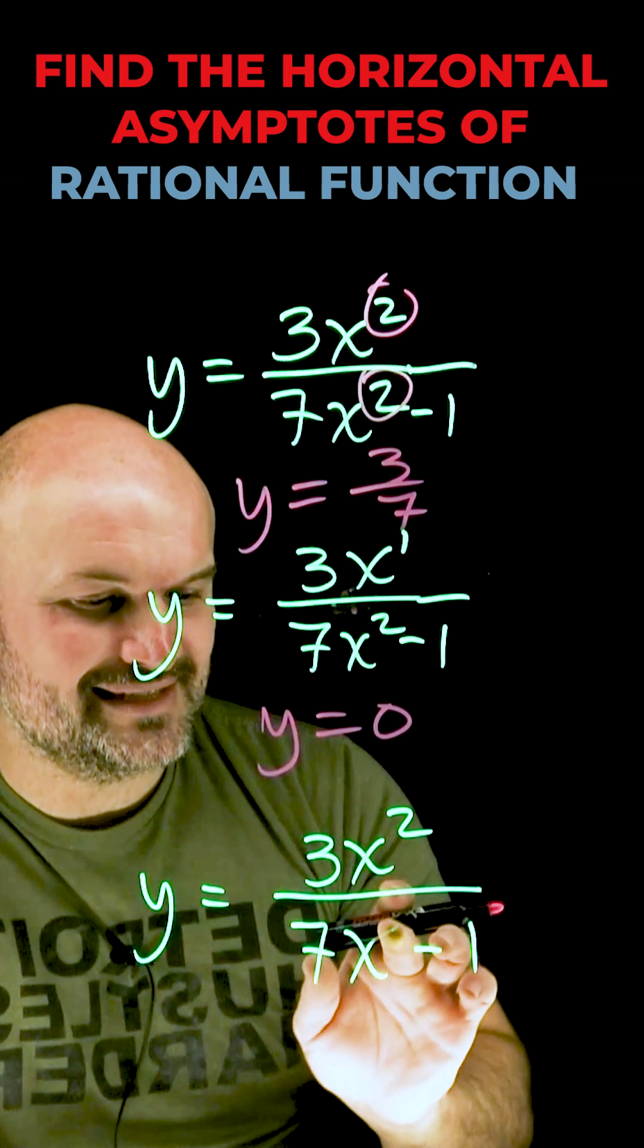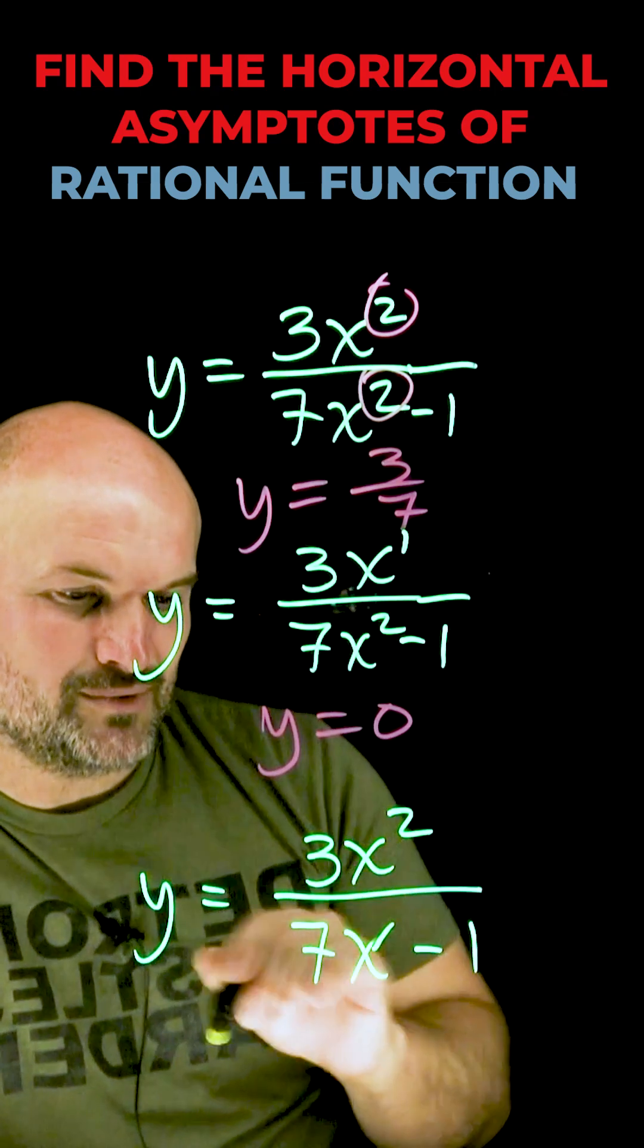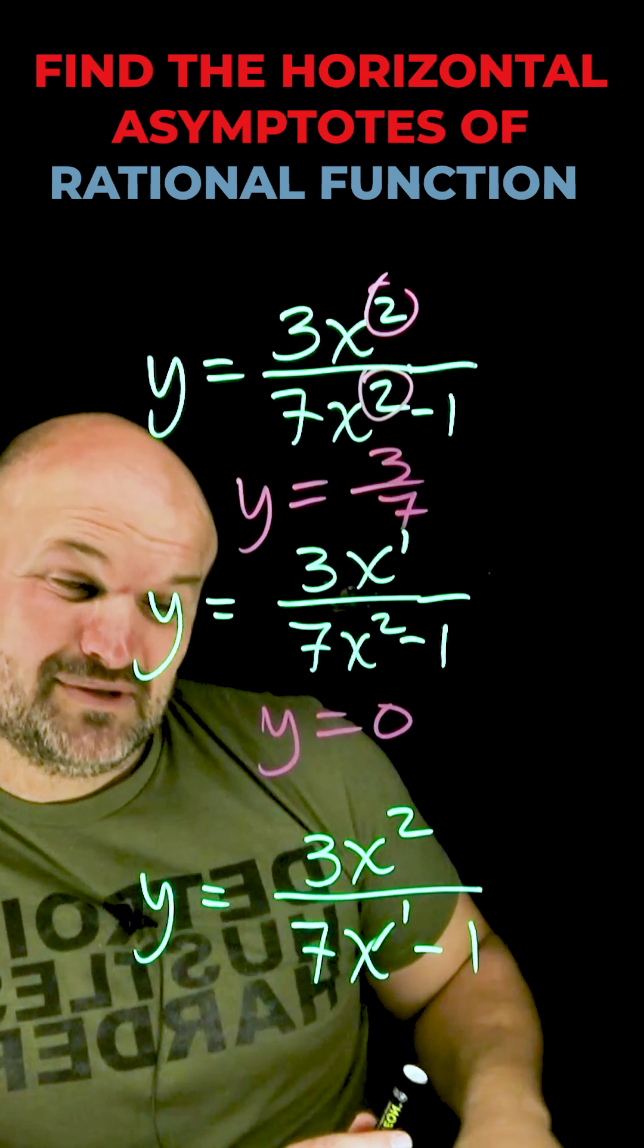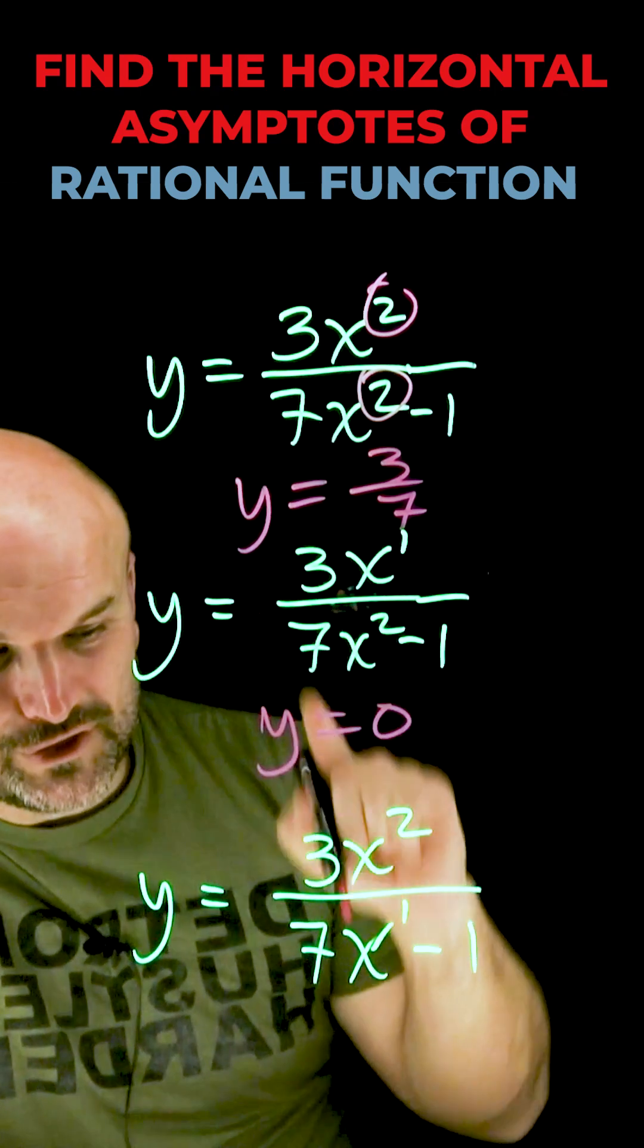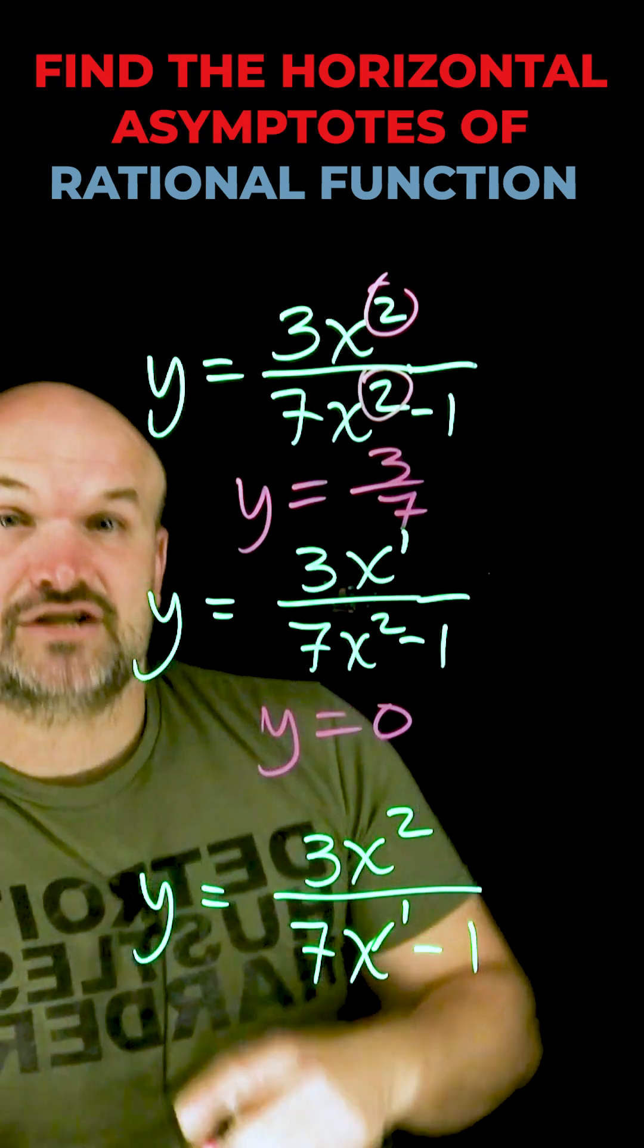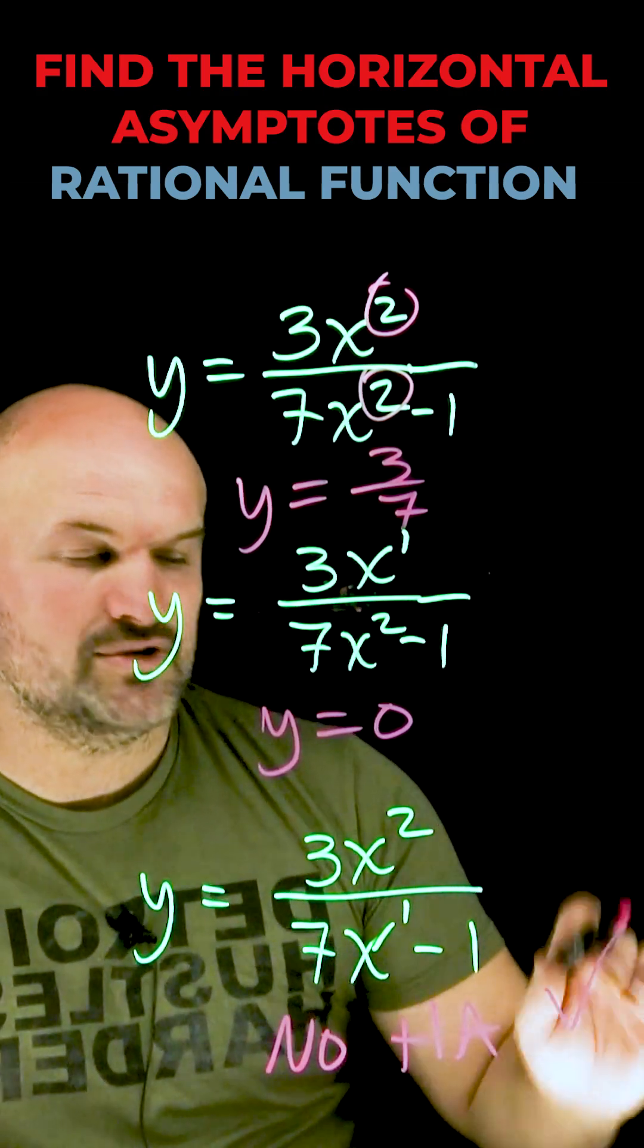Now, what about when the degree in the denominator is less than the degree in the numerator? In this case, you have 3x squared divided by 7x, again, to the first power minus 1. Again, this one's pretty simple to remember as well. Whenever your degree in your denominator is smaller than your degree in your numerator, that means that can actually divide into it. So therefore, there is no horizontal asymptote.